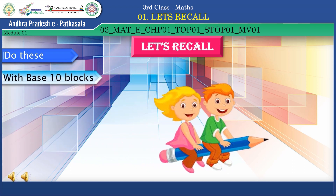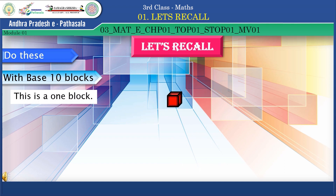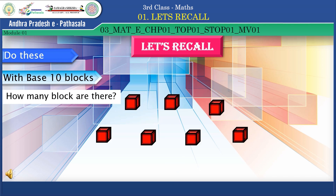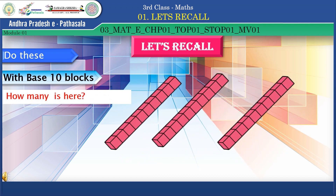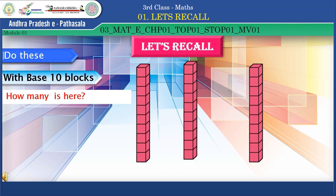Now we move to the next activity: base ten blocks. This is one block. How many blocks are there? I'm going to show one bar — this bar is equal to ten blocks. How many bars are here? Yes, one, two, three — three tens. Three tens are thirty. Good!